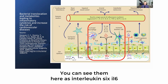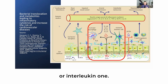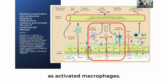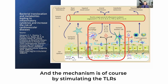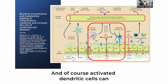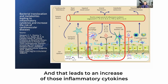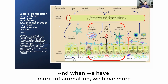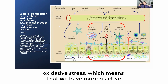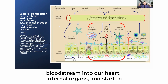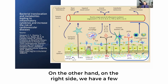As LPS leaks through the cells into the bloodstream, it triggers an immune reaction and the expression of inflammatory cytokines — you can see them here as interleukin-6 (IL-6) and interleukin-1. These are secreted by a variety of cells such as activated macrophages, stimulating TLRs. Activated dendritic cells and other inflammatory cells also secrete these cytokines, leading to increased inflammatory cytokines in the bloodstream, more oxidative stress, and more reactive oxygen species that travel to the heart and internal organs, causing damage to blood vessels.